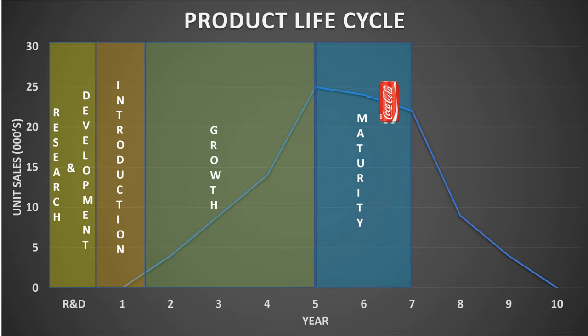The next stage is maturity, which is when demand for the product starts to stagnate. Although the product is typically well established and well known at this stage, it tends to stagnate as there will also be high competition in the market. However, a key positive is that cost of production and investment in marketing is typically much lower, so cash flow tends to still be positive during this stage.